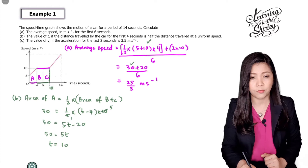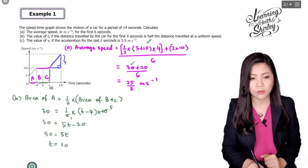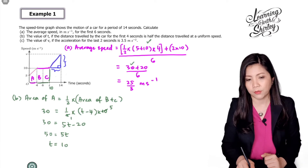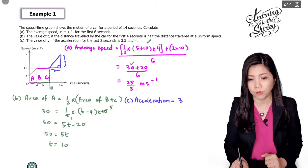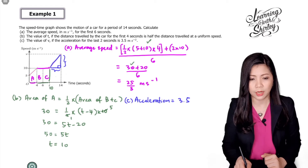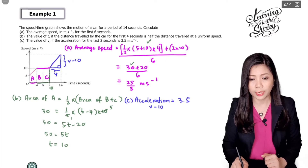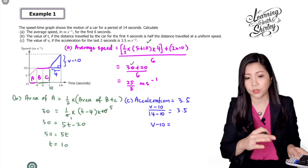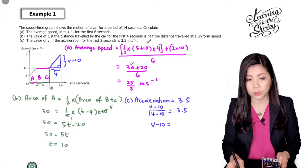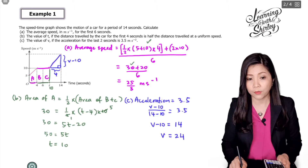For part C, find the value of V if the acceleration for the last 2 seconds is 3.5 meters per second squared — meaning we find the gradient of this line. Acceleration equals (V minus 10) over (14 minus 10), which equals 3.5. So V minus 10 equals 3.5 times 4, which is 14. Therefore V equals 14 plus 10, giving us V equals 24.